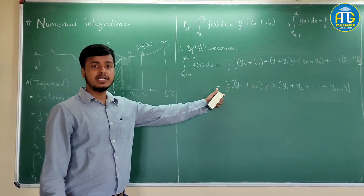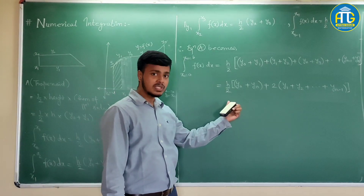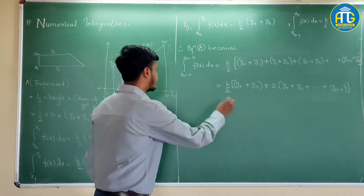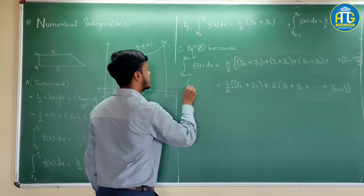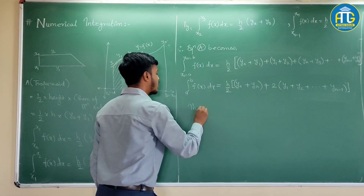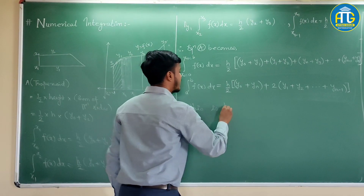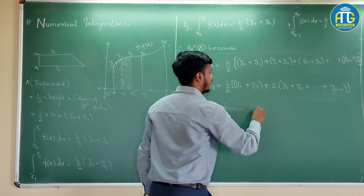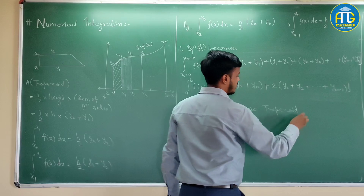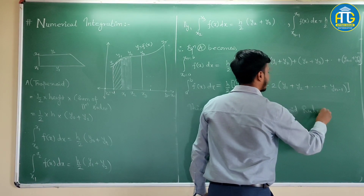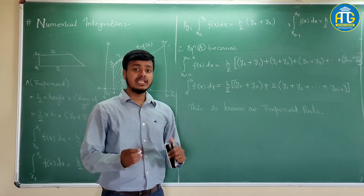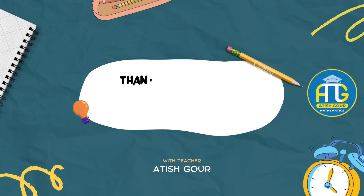And this is nothing but the trapezoidal rule, which we will use to find out the integral of the function for the given data. So the integral from a to b of f(x) dx equals this expression, and this is known as the trapezoidal rule. We will make use of this to find out the numerical integration for the given data.